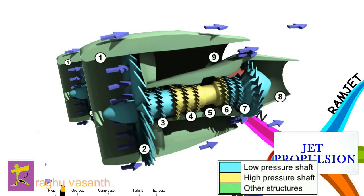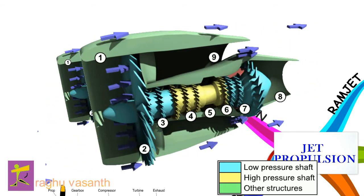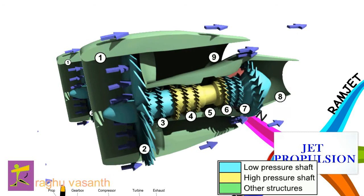Engines that use more jet thrust relative to fan thrust are known as low bypass turbofans. Conversely those that have considerably more fan thrust than jet thrust are known as high bypass. Most commercial aviation jet engines in use today are of the high bypass type, and most modern military fighter engines are low bypass. Afterburners are not used on high bypass turbofan engines but may be used on either low bypass turbofan or turbojet engines.